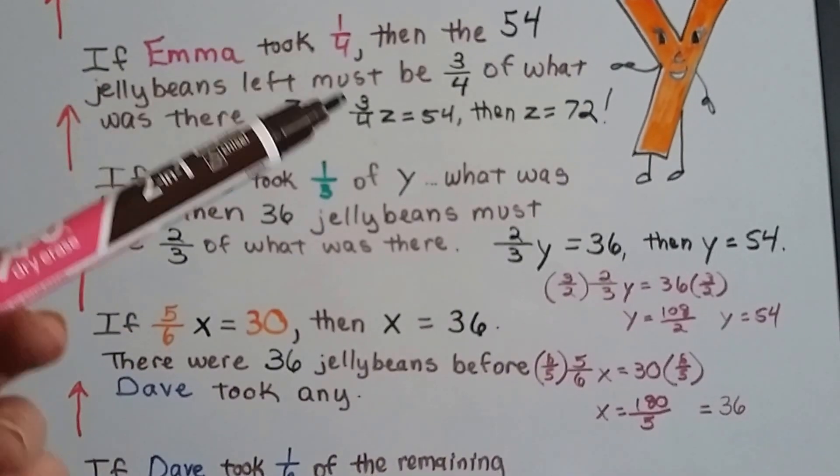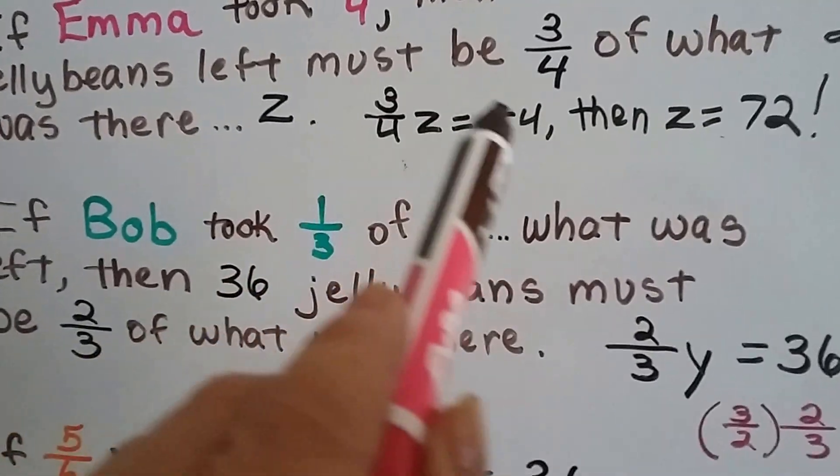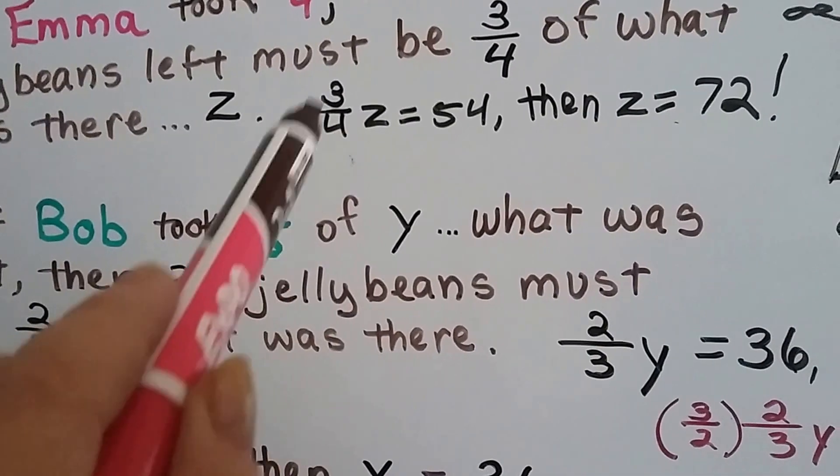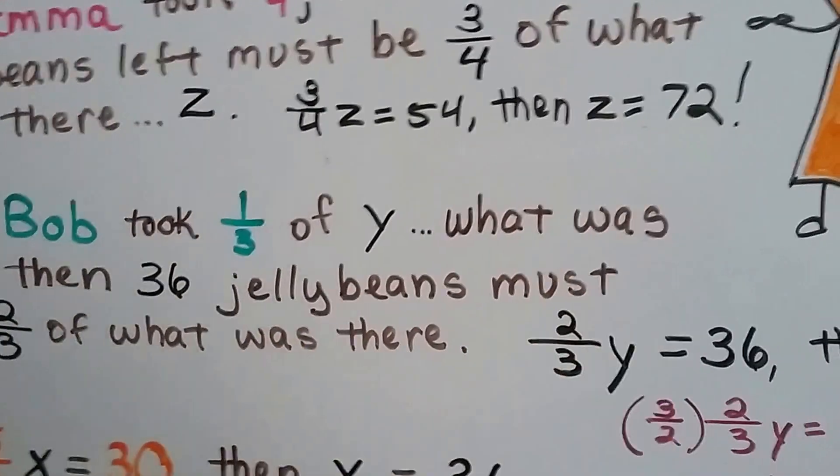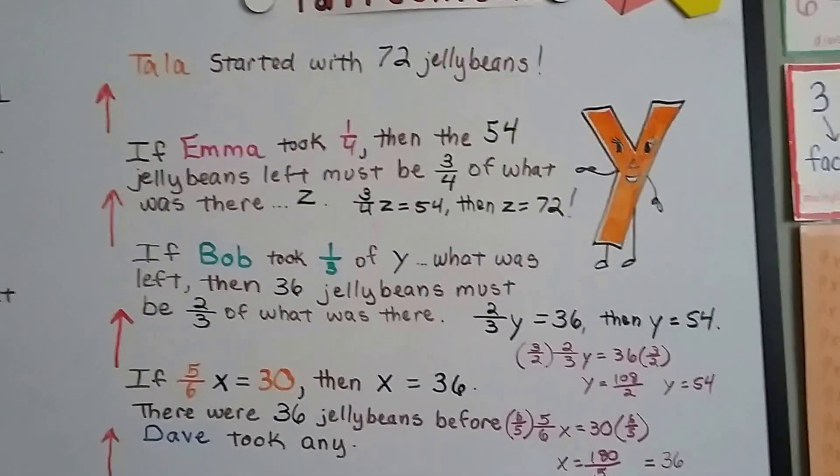After she took her one-fourth, it left three-fourths Z. So now all we have to do is multiply each side of this equation by four over three, the reciprocal of three-fourths, and we'll see that Z equals seventy-two. So Tala started with seventy-two jelly beans.